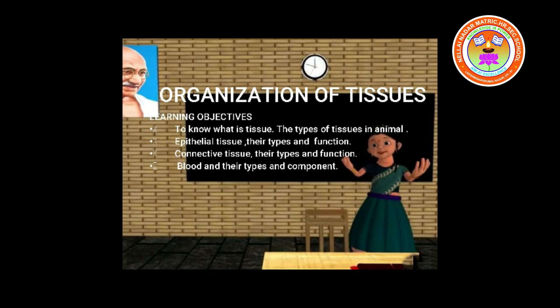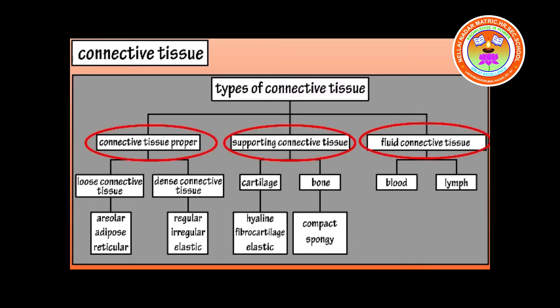Connective tissue is one of the most abundant and widely distributed tissues. It provides structural framework and gives support to different tissues forming organs. It prevents organs from getting displaced by body movement. The intercellular substance of connective tissue is known as matrix. Connective tissue can be divided into three types: loose connective tissue, dense connective tissue, and specialized connective tissue.